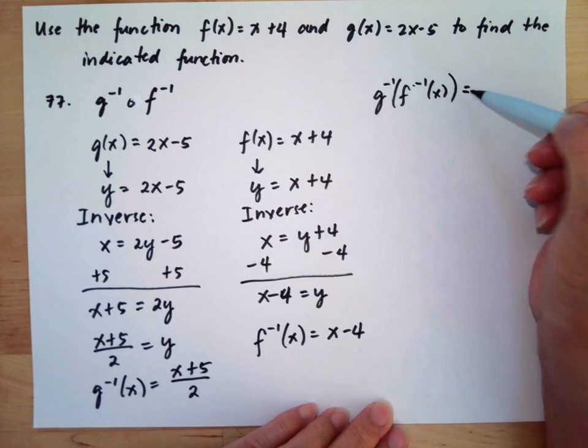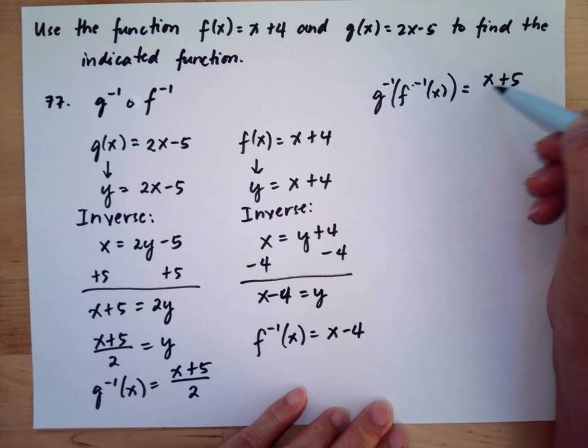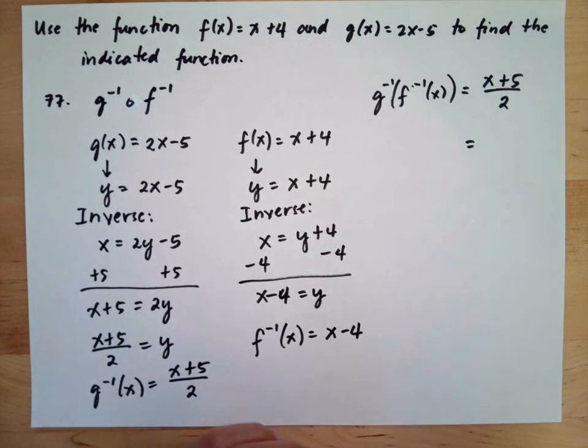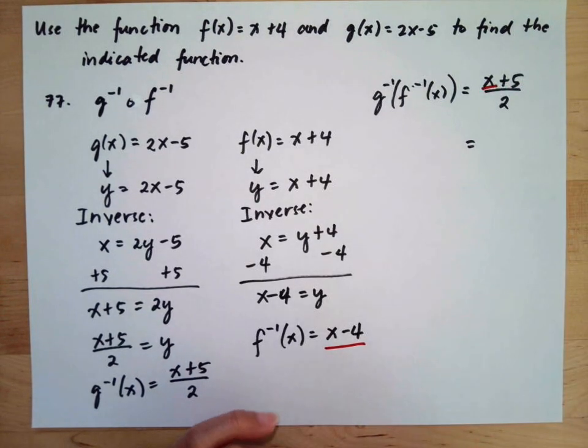This equals g inverse of x, which is (x + 5)/2. We substitute (x - 4) in place of x in the expression (x + 5)/2.